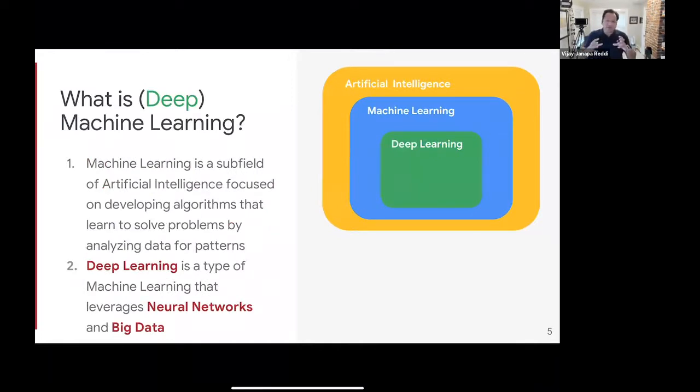Within machine learning, there is this notion of what we call deep learning. Deep learning is a very specific type of machine learning that focuses on using neural networks, trying to effectively mimic the way the brain works and implement that in a hardware-software scheme by giving it lots of data.